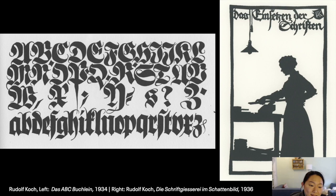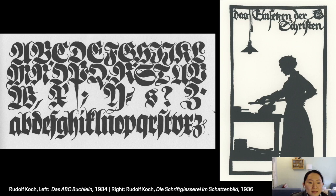Koch used pens, metal, fabric, wood blocks, paper — everything he could get his hands on — and he seemed to impart his style no matter what material he used. He produced a lot of work and designed typefaces primarily for the Klingspor foundry in Offenbach. He was also a very religious figure, so you can see a lot of his work is dedicated to God.